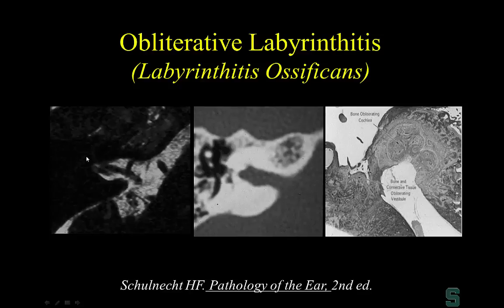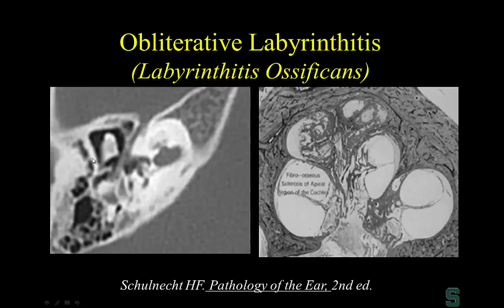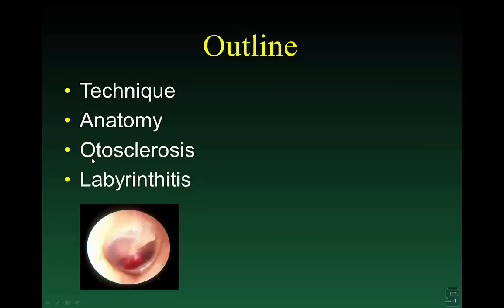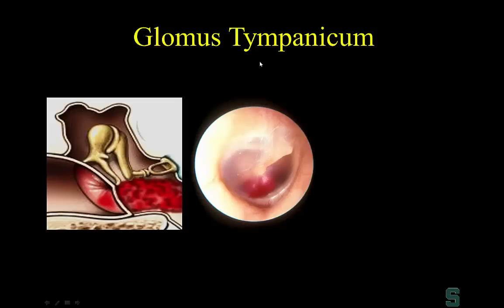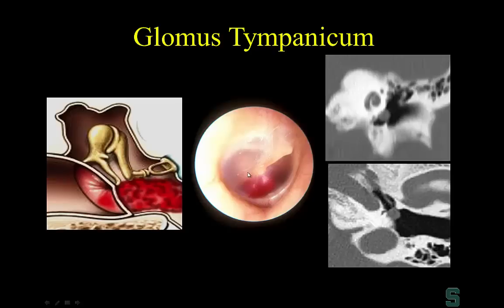Now let's take a clinical approach: what do we look for when someone has a red retrotympanic mass — a red mass visible behind the tympanic membrane? The first consideration is a glomus tympanicum tumor. A glomus tumor arising in and isolated to the middle ear cavity is a glomus tympanicum. Here we have a well-defined soft tissue mass on the cochlear promontory.